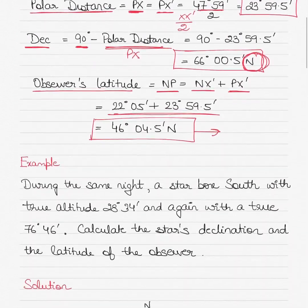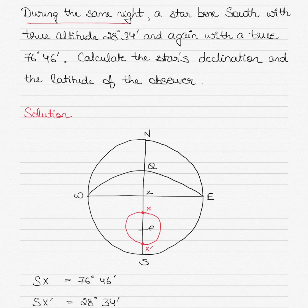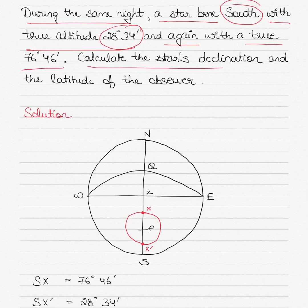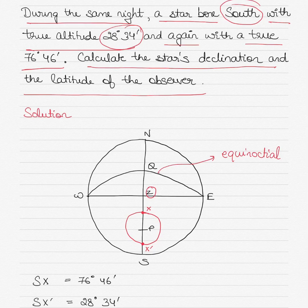Now for the southern hemisphere example: during the same night a star was bearing south with a true altitude of 28 degrees 34 minutes, and again it bore south with a true altitude of 76 degrees 46 minutes. Calculate the star's declination and the observer's latitude. It is similar to the previous example but from the southern hemisphere's perspective. You as the observer are south of the equator, the star is also bearing south — both the star and the observer are south of the equinoctial, so the latitude and declination will both be south.